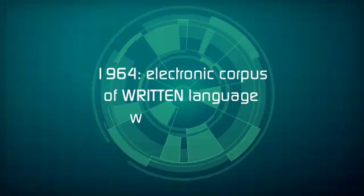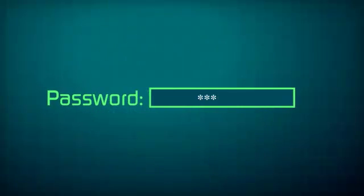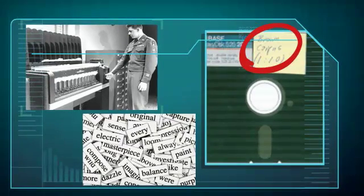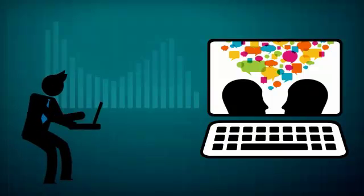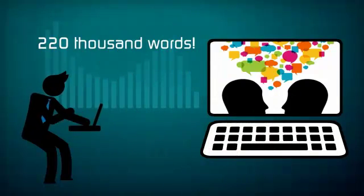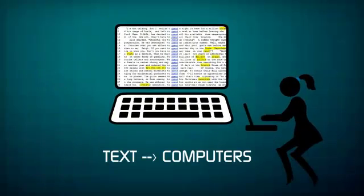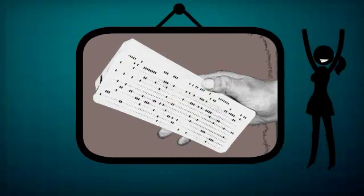1964 marks the year the first electronic corpus of written language was launched: the Brown University Standard Corpus of Present-Day American English, containing a million words. Around the same time, in England, Sinclair started compiling the first electronic corpus of spoken language containing 220,000 words. This doesn't sound like a lot compared to electronic corpora nowadays, but texts had to be transferred to computers through punch cards, so this was a huge undertaking.